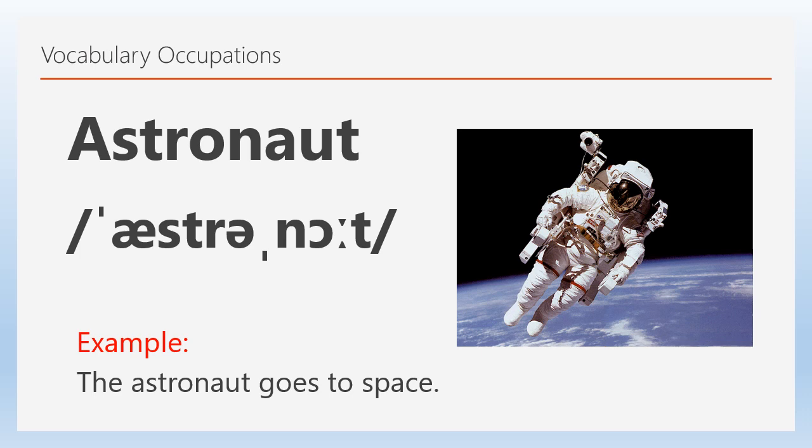We have the first vocabulary word: astronaut. As you can see at the bottom, in the phonetic sounds of the word, there's an apostrophe at the top, which means the first sound — 'ah' — is going to be strong. Then we have the schwa sound, which comes from the throat: 'ah.' Then the phonetic symbol for the 'o' sound in English. So reading it together: 'as,' 'tro,' 'not' — astronaut.